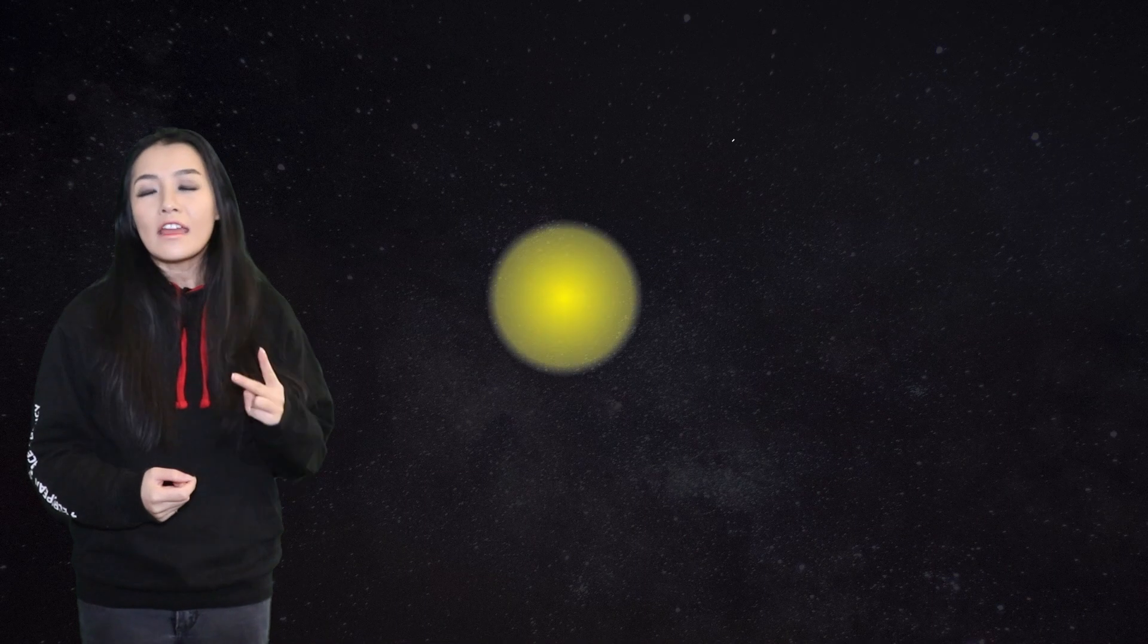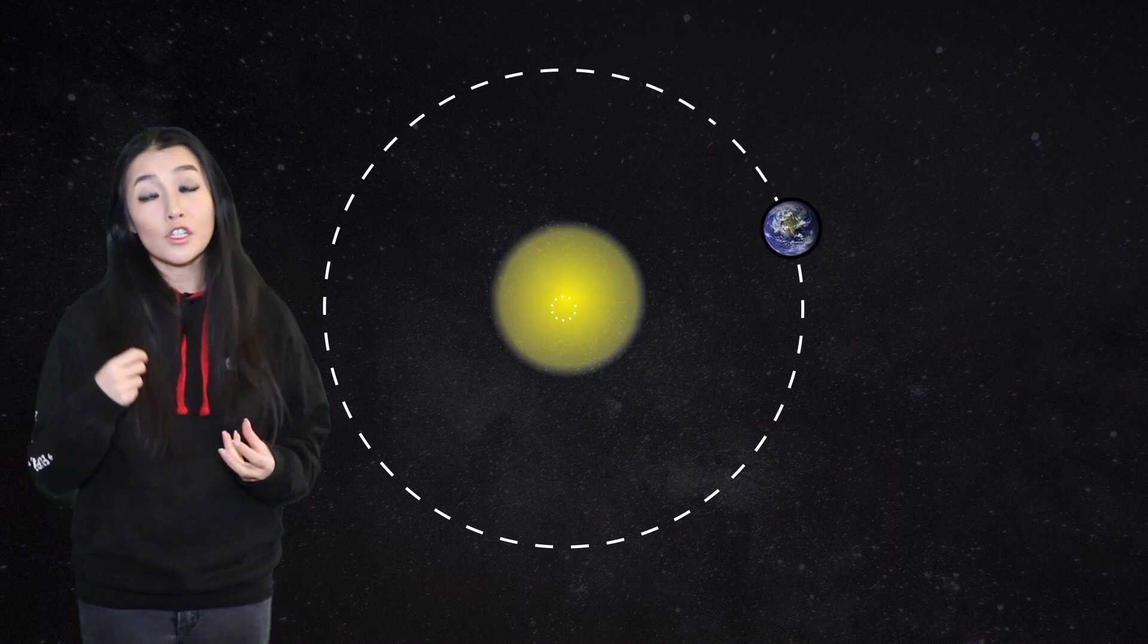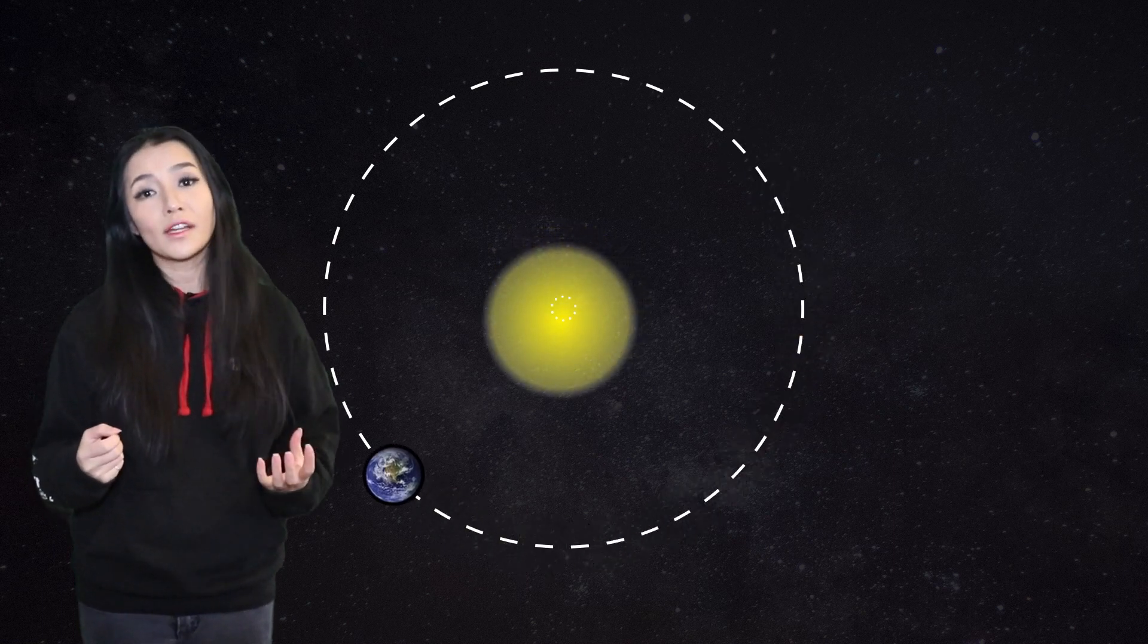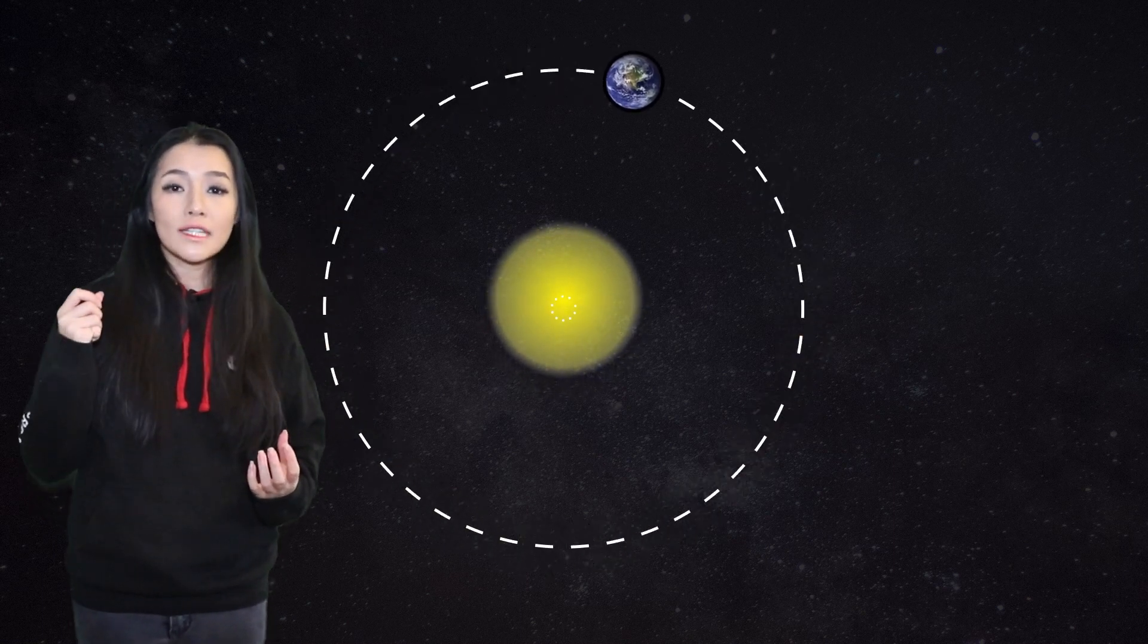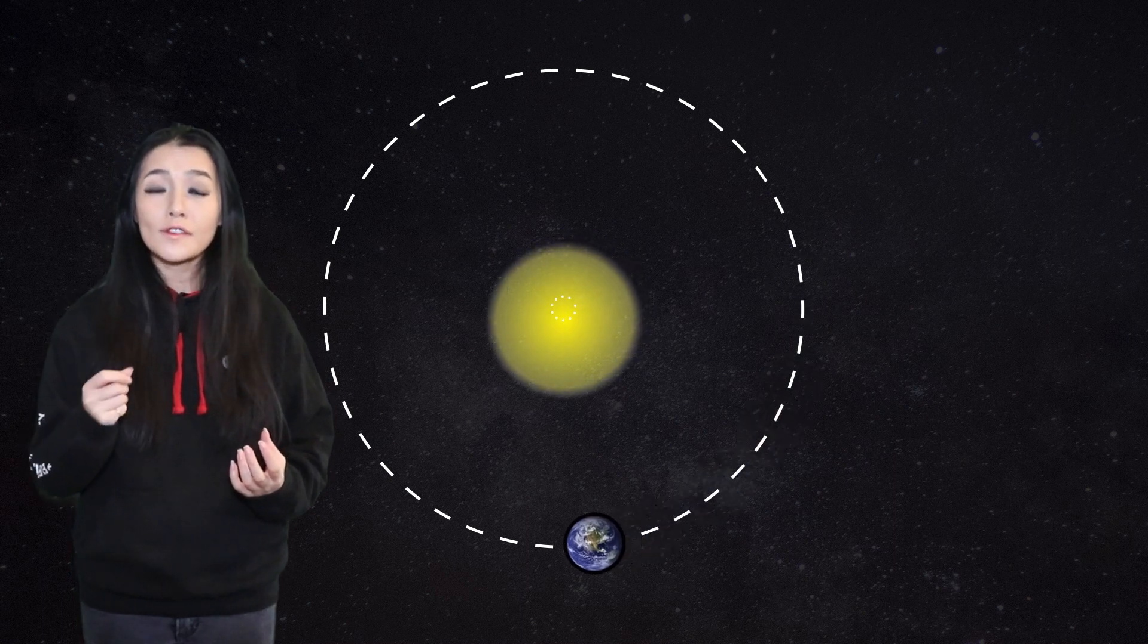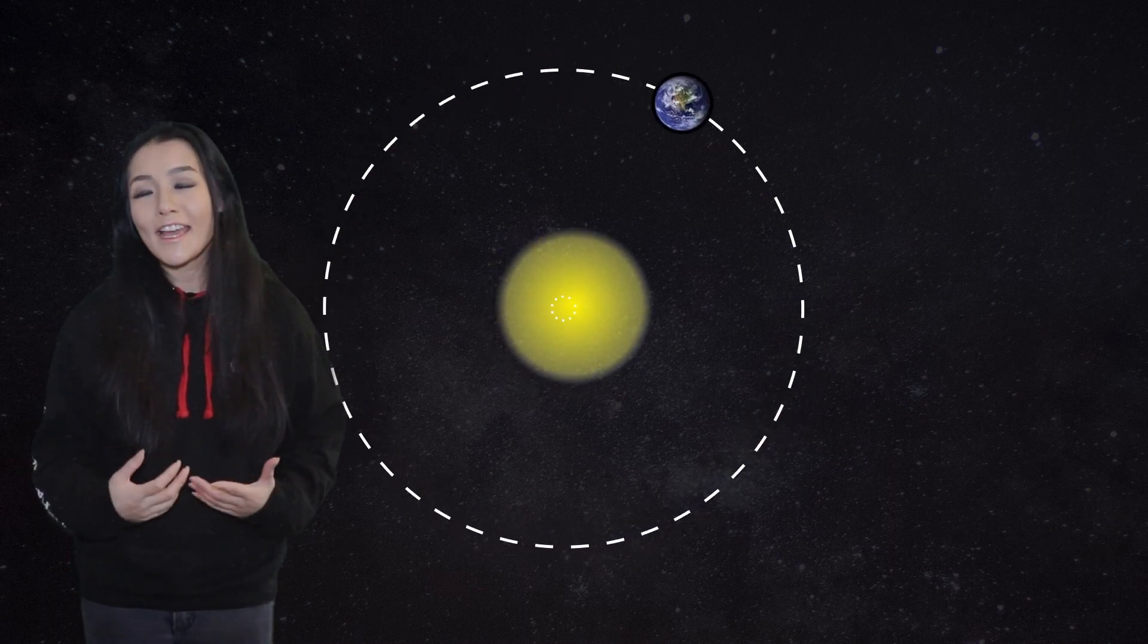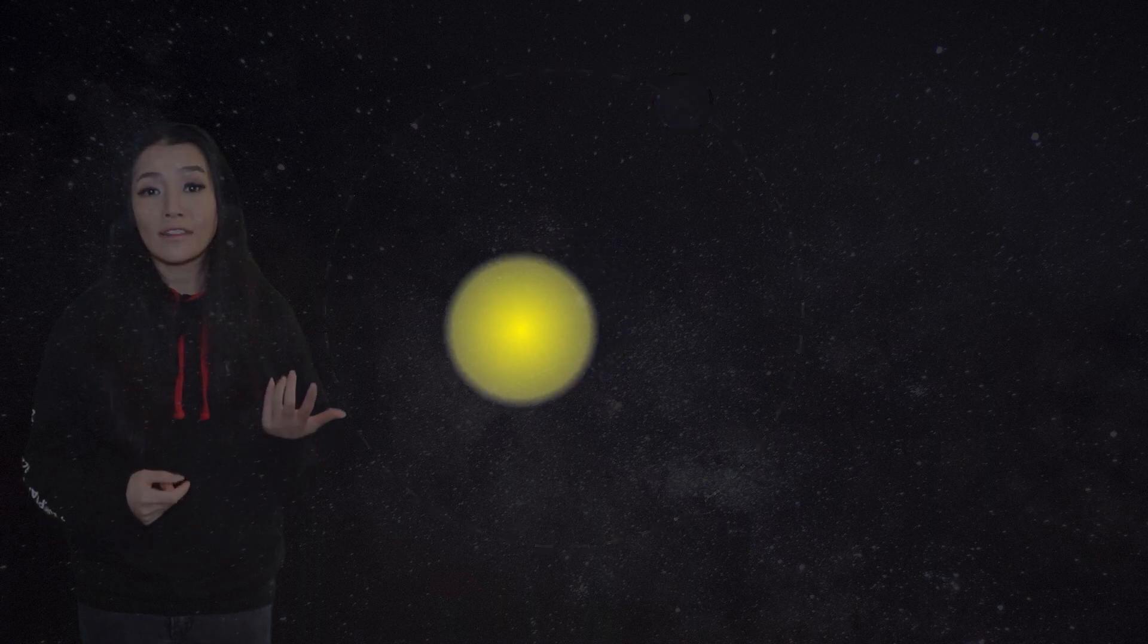When you have two bodies orbiting around one another, if one of those objects is much lighter than the other one then the lighter object will tend to orbit at a point close to the center of the heavier one. This is the case for example of the Sun and the Earth.